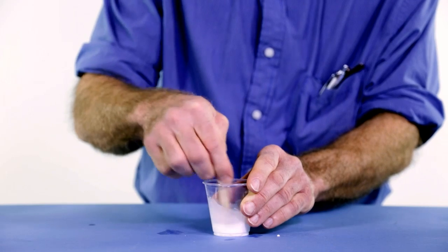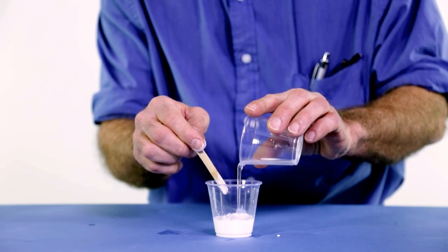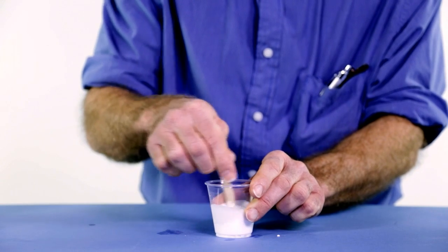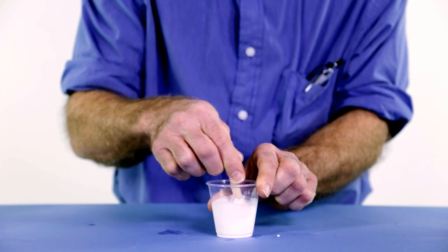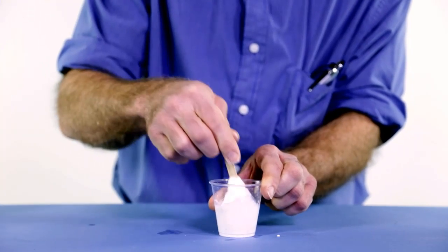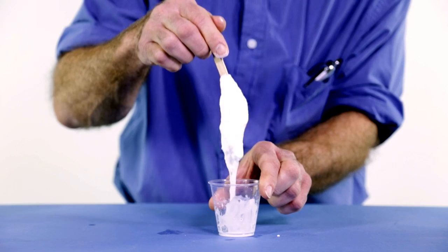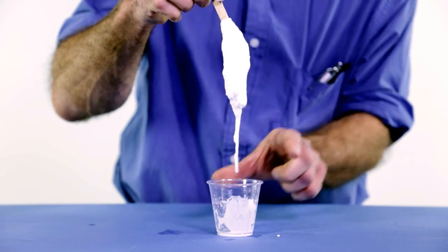And now, we're just going to add the borax solution to the glue solution and see what happens. You can see it begins to change until you have this really kind of cool glob. And there's your slime.